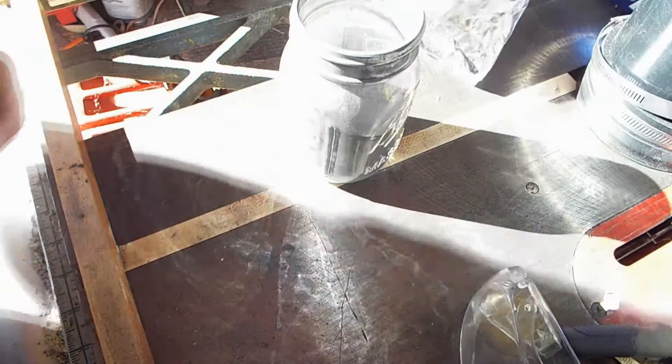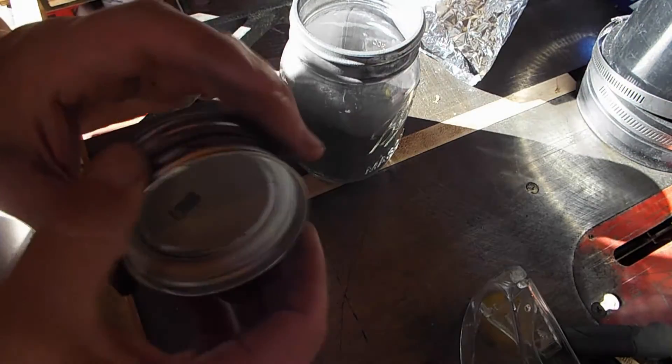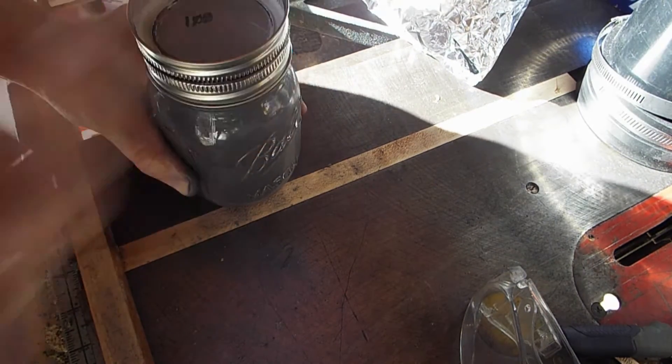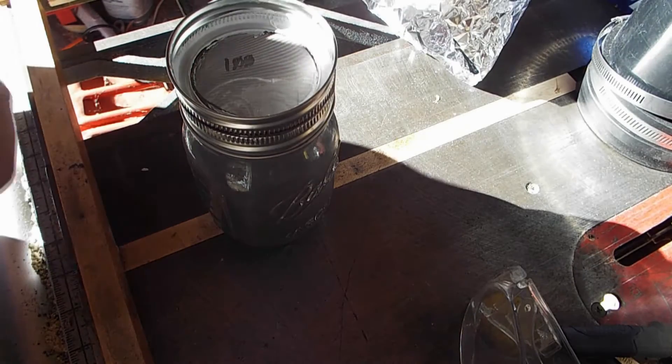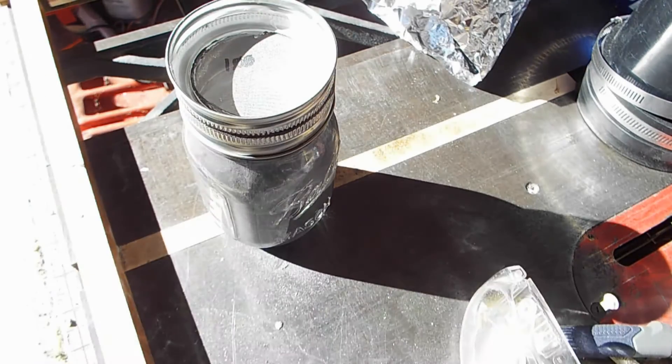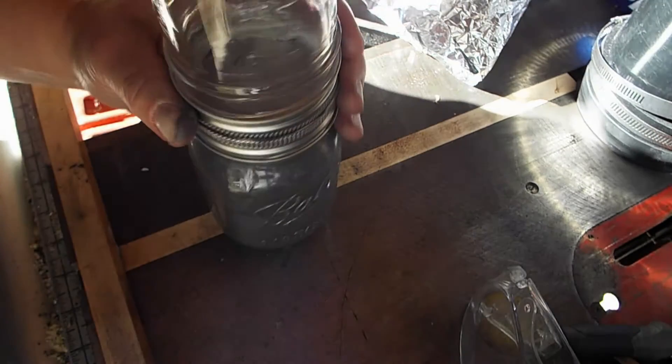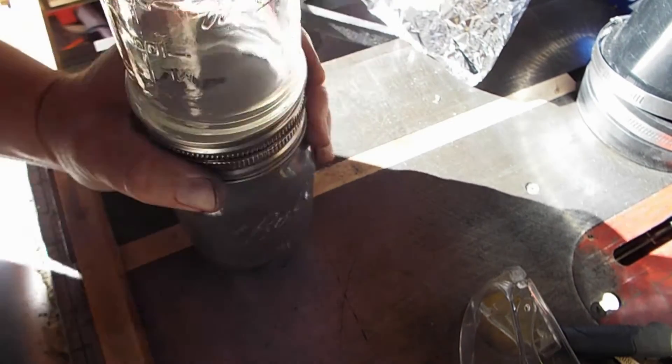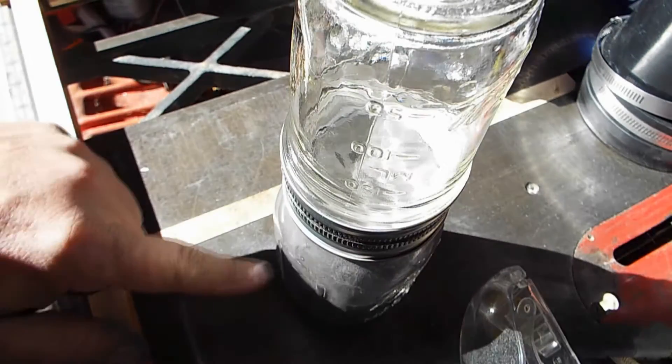So we'll start with the 100 mesh lid classifier. Screw that on and stick a new jar on here. And I'm going to shake it up and see how much of this gets into there.